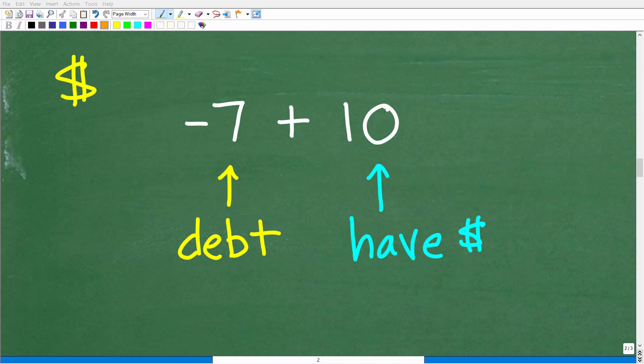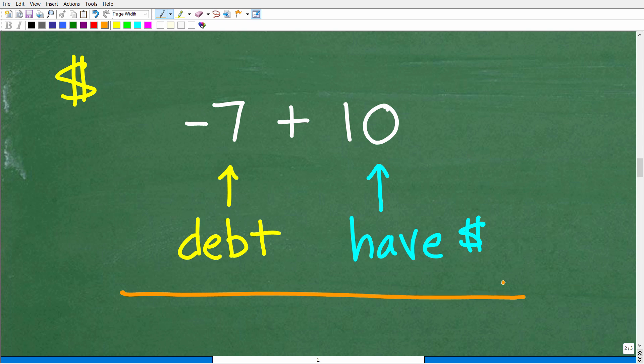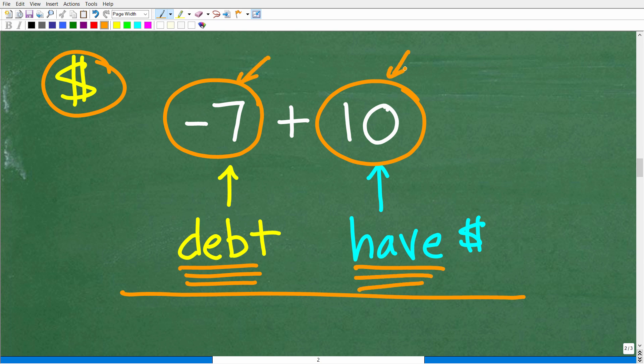The easiest way to remember how to add positive and negative numbers is to think of these numbers in terms of money. A negative number is like having debt, money that you owe. A positive number is like money that you have. If you owe someone $7 and you have $10, you have to pay them back $7 and you're left with $3 or positive $3.